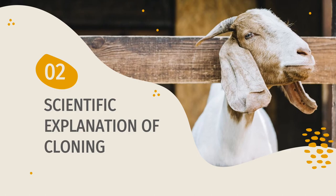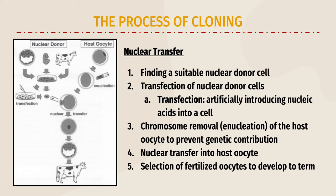The scientific explanation of cloning: the most common cloning technique is called somatic cell nuclear transfer, where the donor egg's nucleus is removed and replaced with the nucleus and genes of a cell from the animal that the scientists wish to duplicate. The cell is then stimulated and implanted into a surrogate mother. The slide above summarizes the process of cloning by nuclear transfer in five steps, beginning with finding a suitable nuclear donor cell and ending with the selection of fertilized cells to develop to term in a surrogate animal.